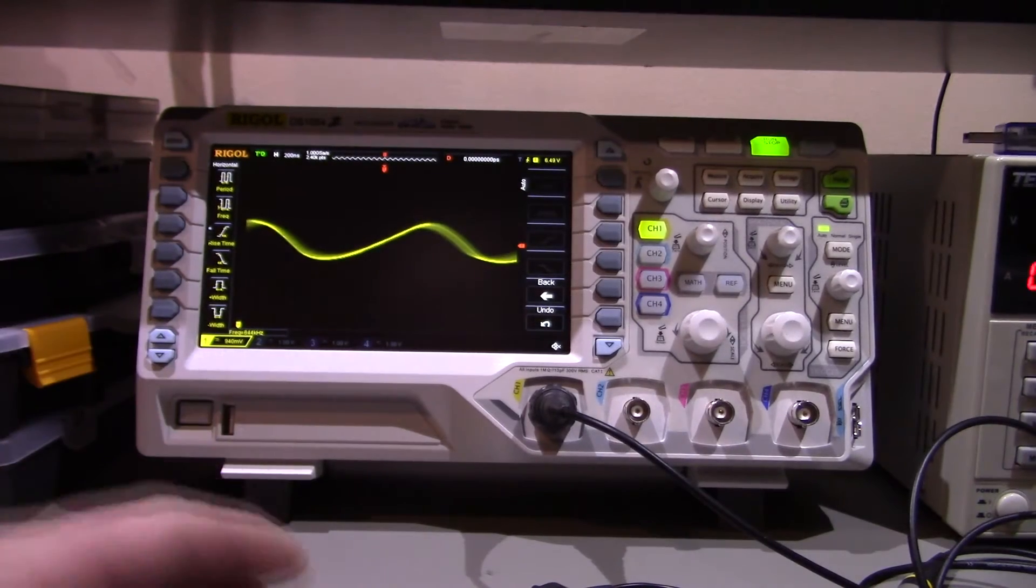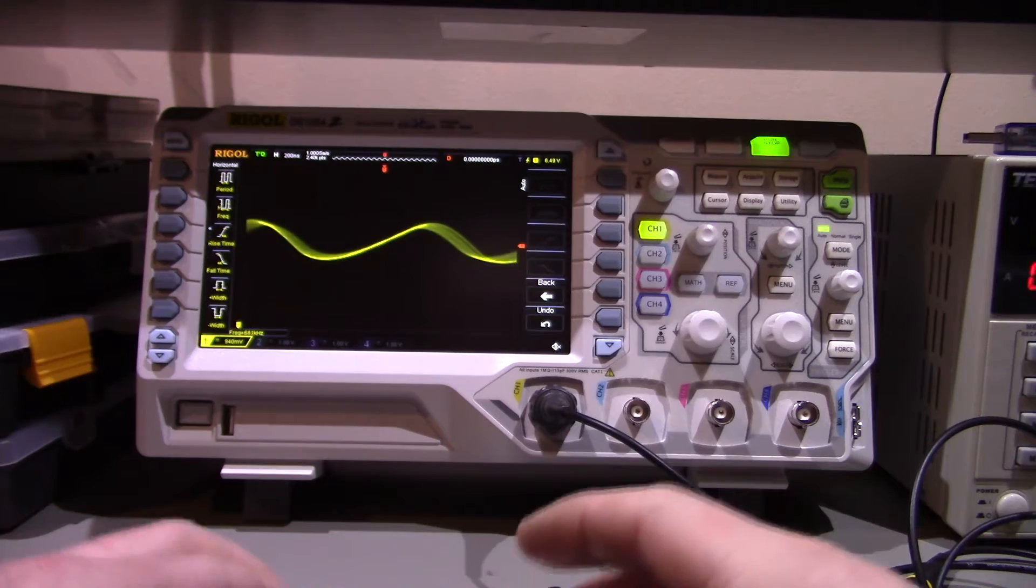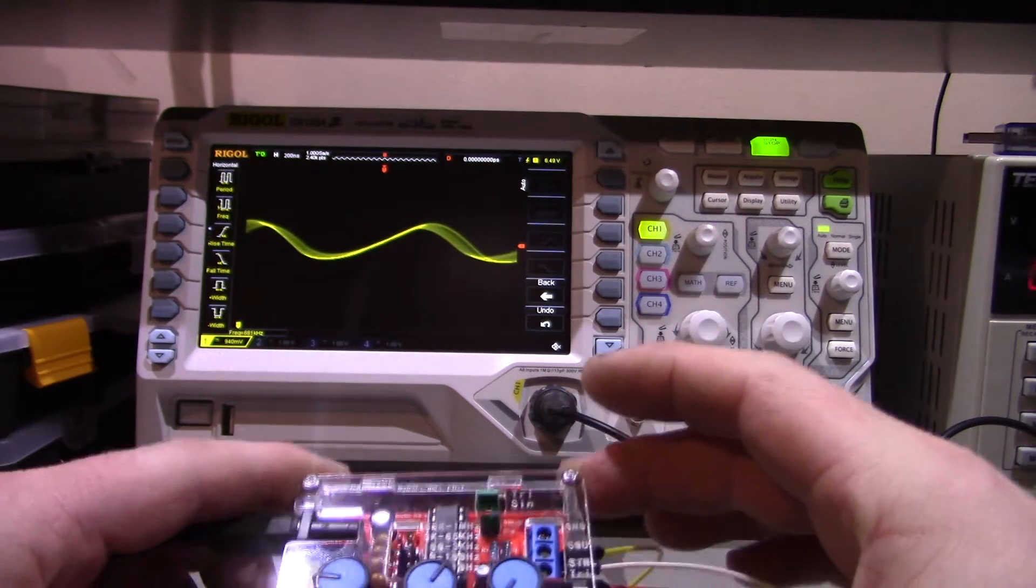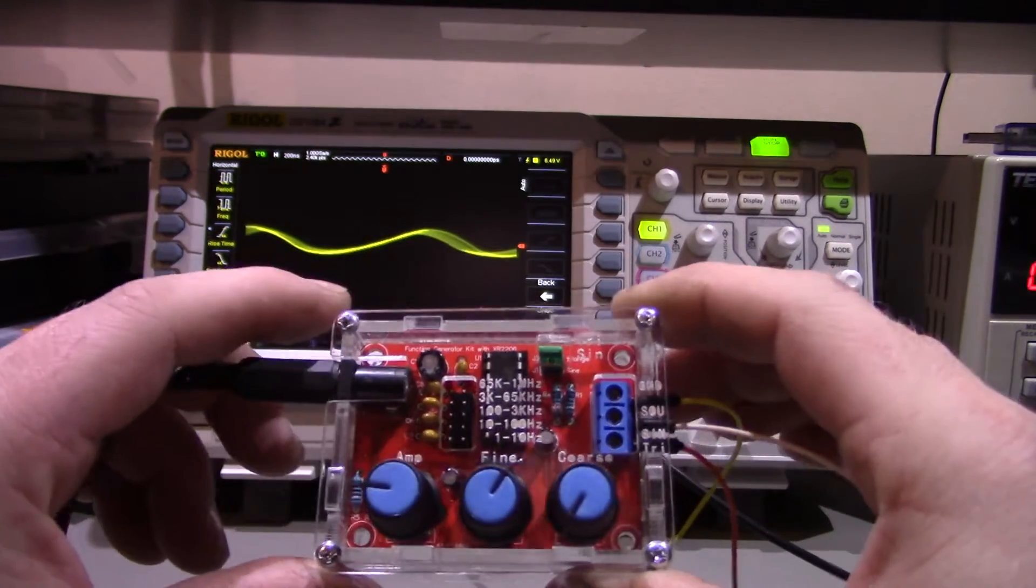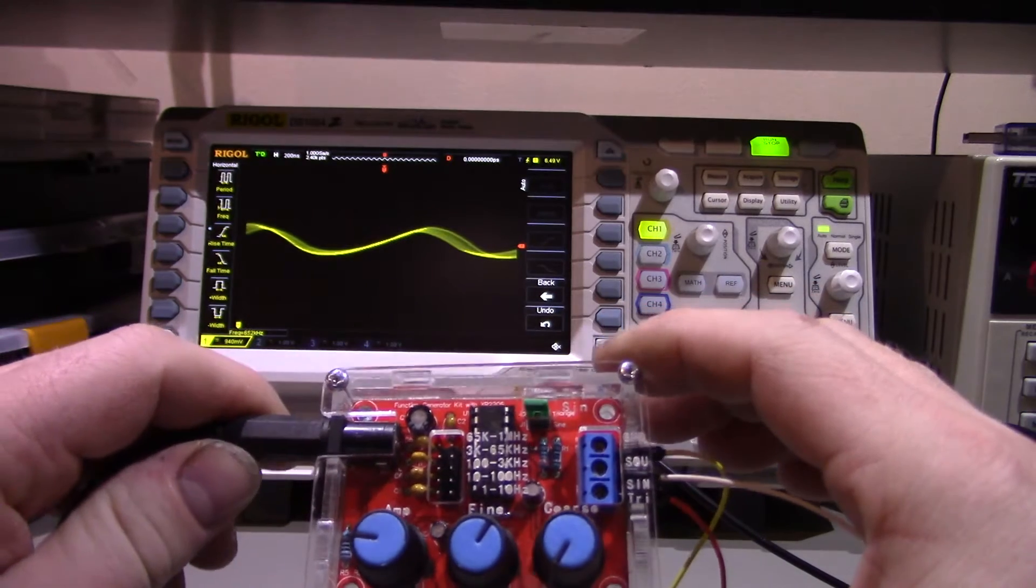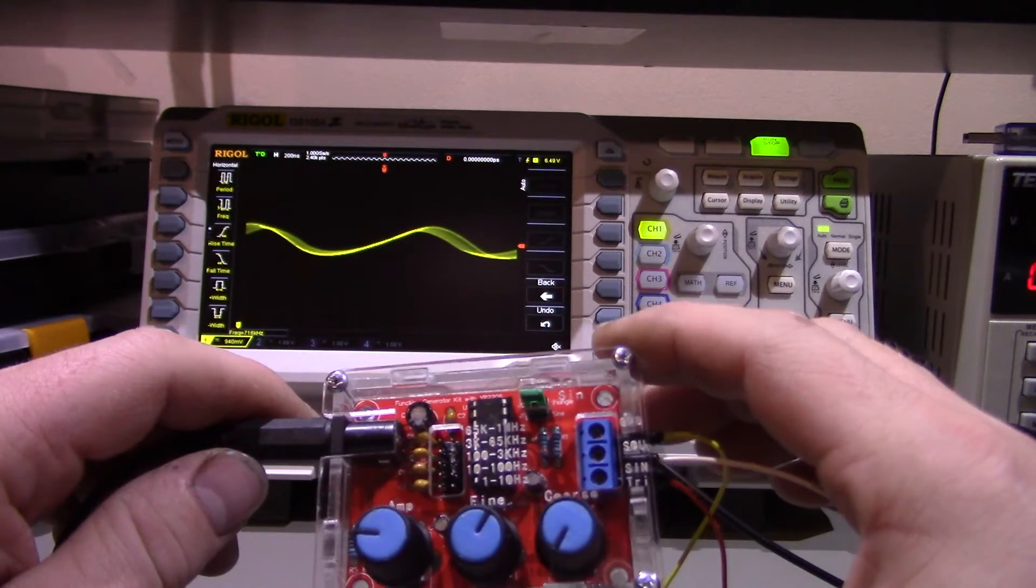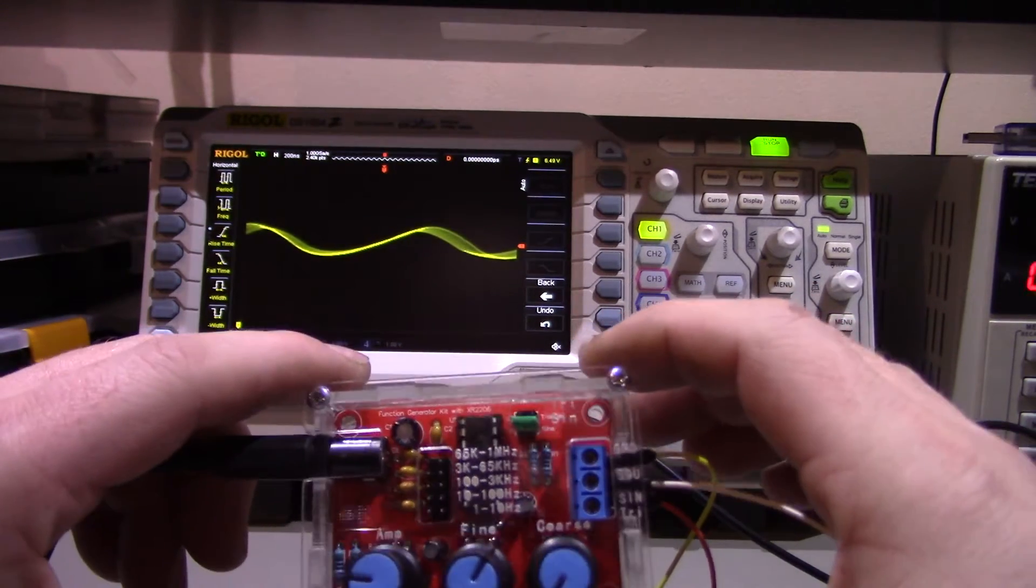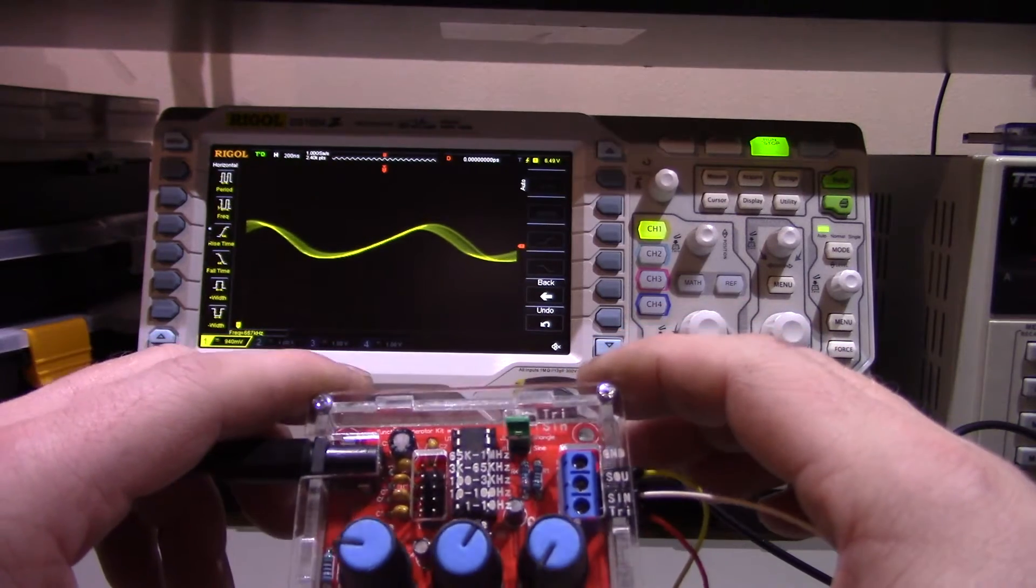Hi, following on from my video earlier this week, I think it was Monday I uploaded it, where I put together this kit from Banggood. This is a function generator that can generate sine waves, triangle waves, and square waves.